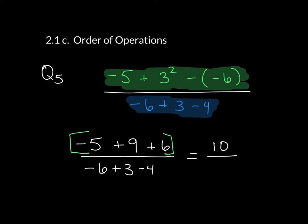And then in the denominator, you have negative 6 plus 3 minus 4, and that's going to leave us with a negative 7.